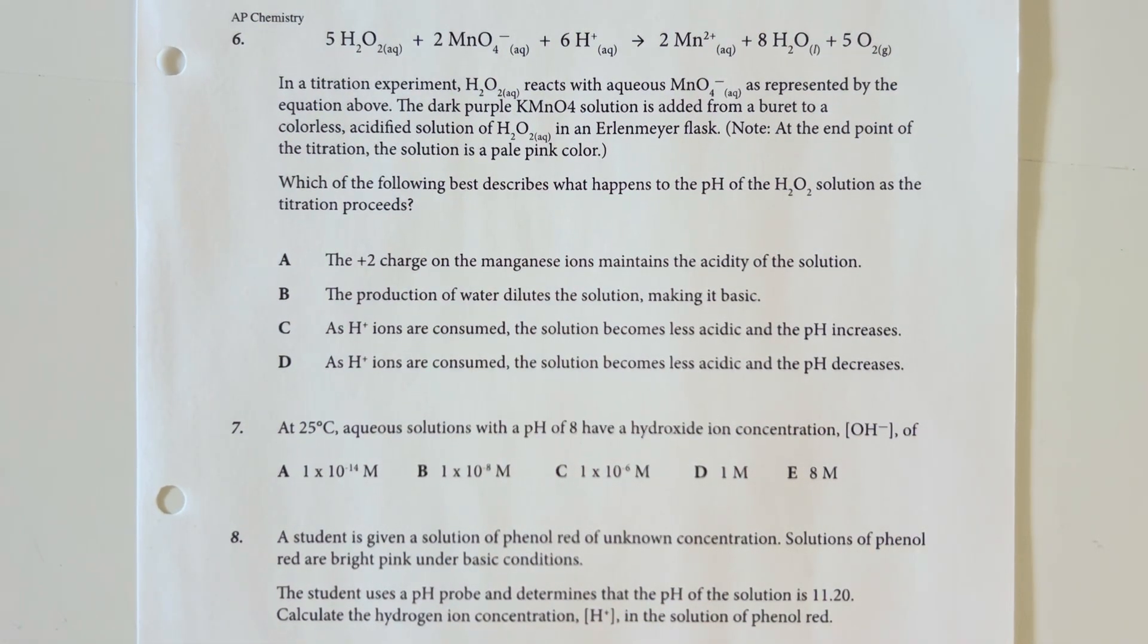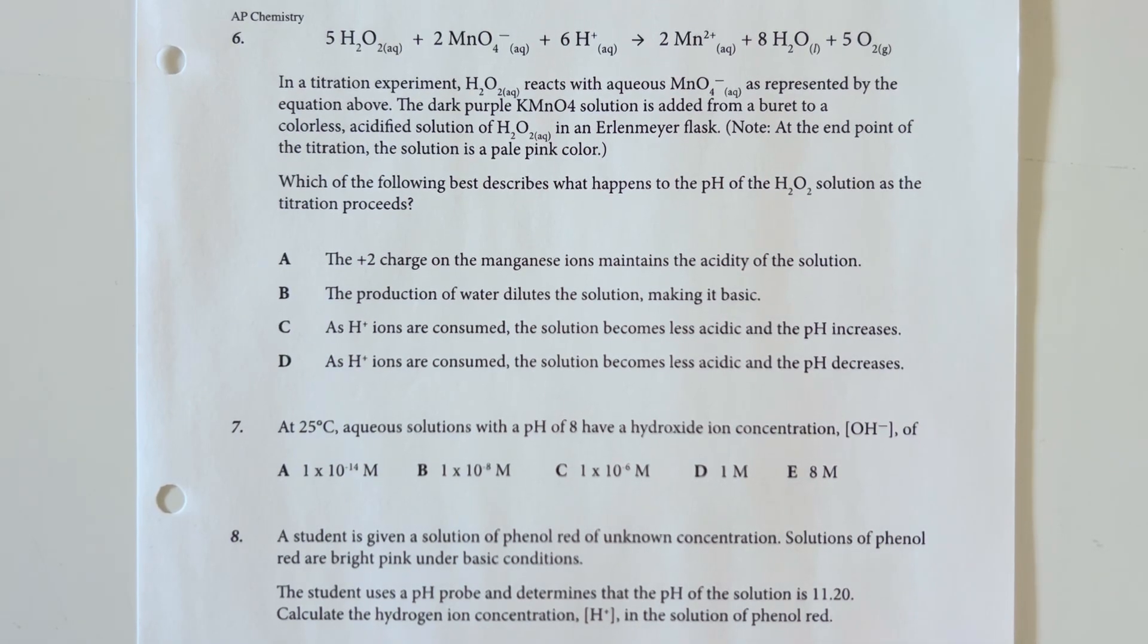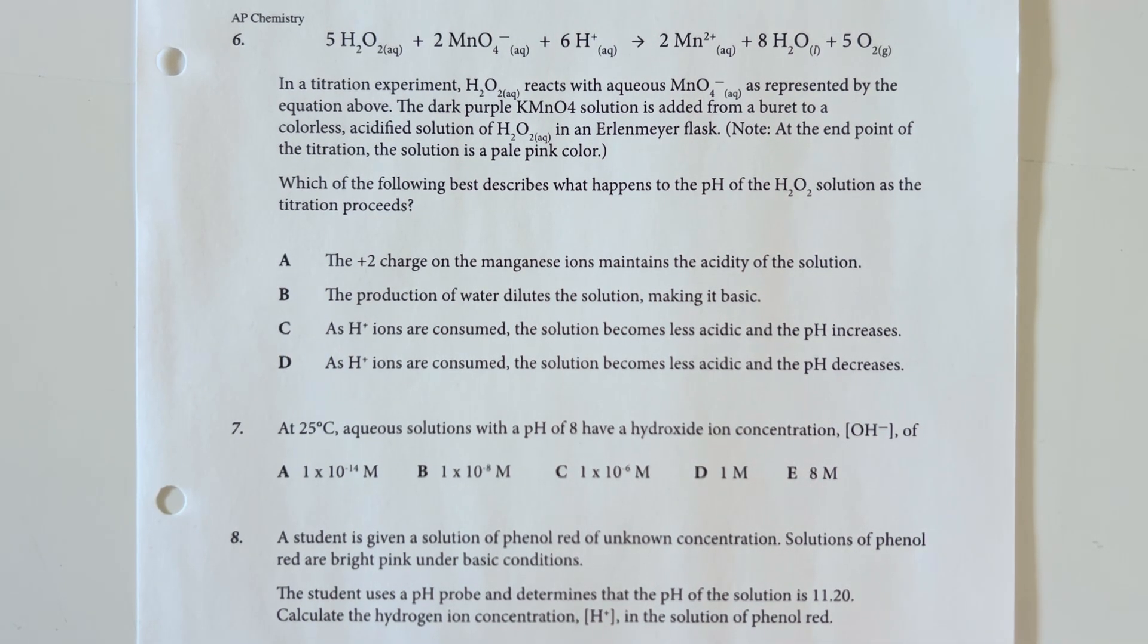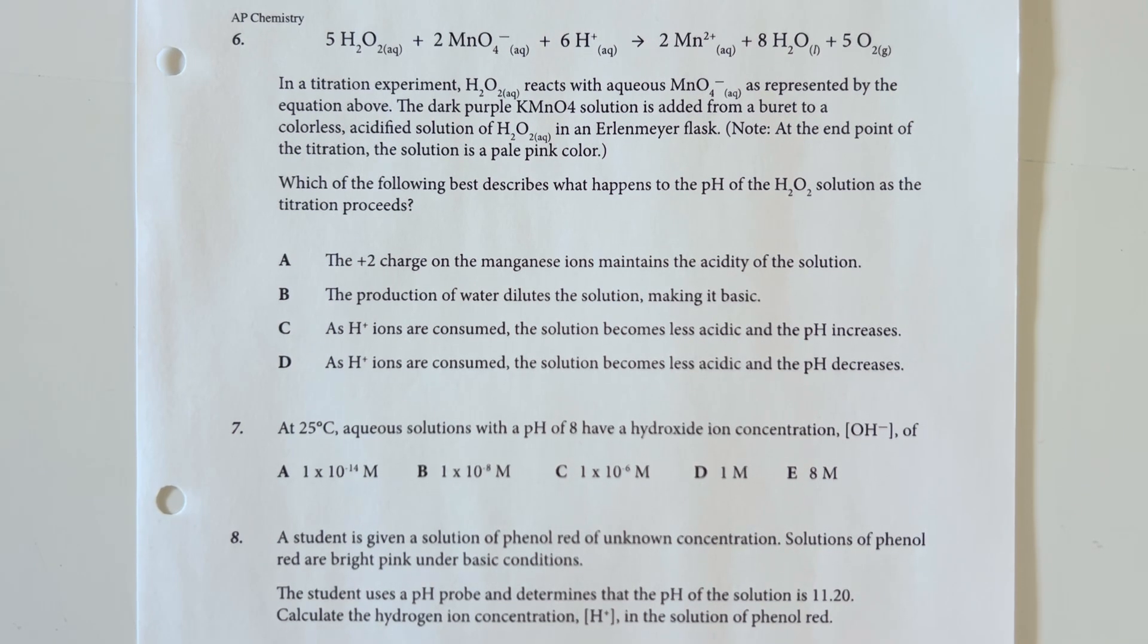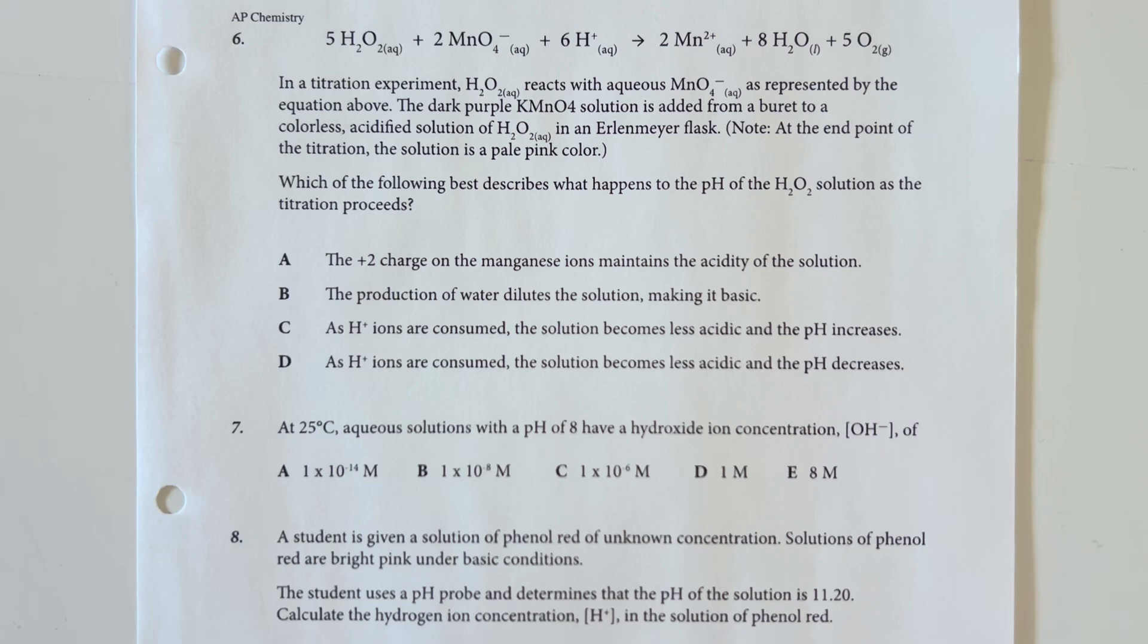In the titration experiment, hydrogen peroxide reacts with aqueous manganate as represented by the equation above. The dark purple potassium permanganate solution is added from a burette to the colorless acidified solution of hydrogen peroxide in an Erlenmeyer flask. Note, at the endpoint of the titration, the solution should be a very pale pink color. Which of the following best describes what happens to the pH of the hydrogen peroxide solution as the titration proceeds?